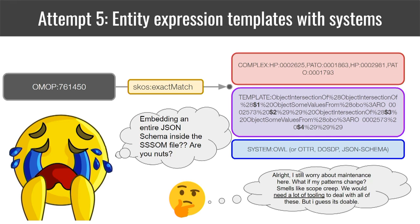Even if we go one step further and add a field saying what language our template is in — OWL, a DOSDP expression, a JSON schema — we're still left asking: is this really maintainable? We're going to need a lot of tooling to deal with this moving forward.